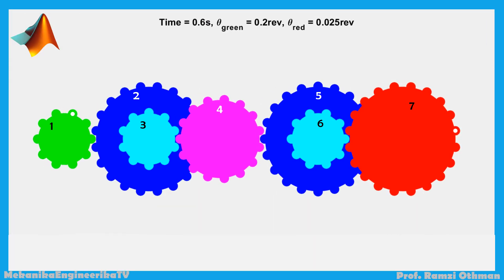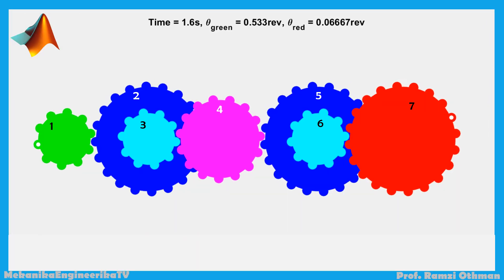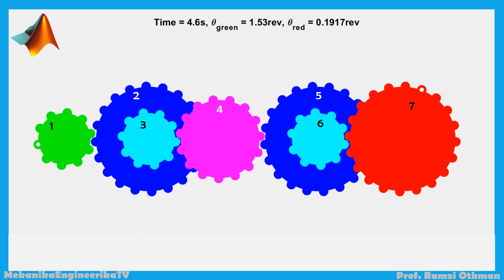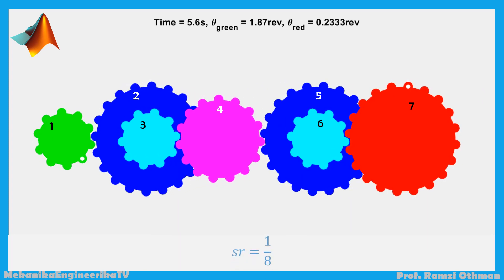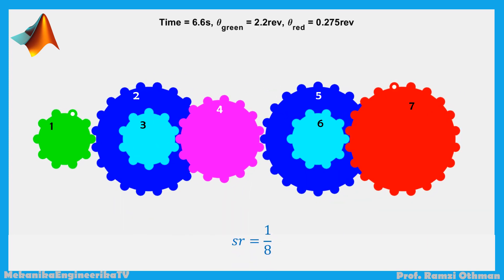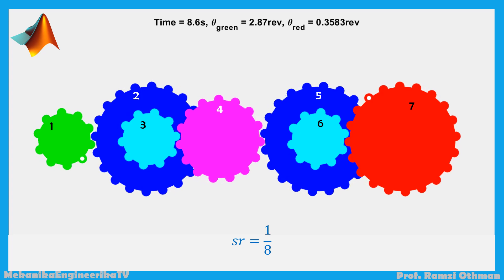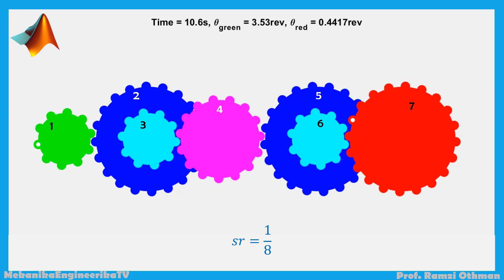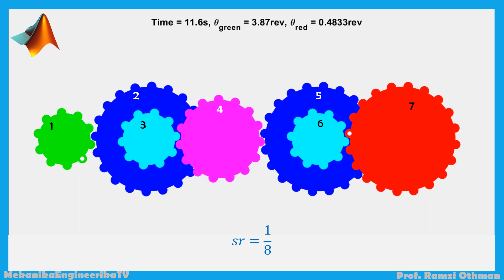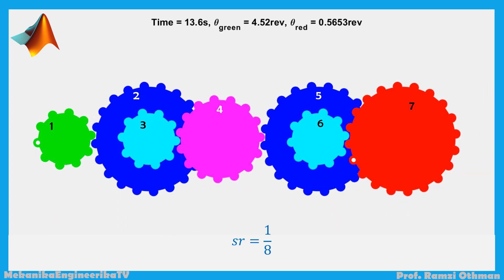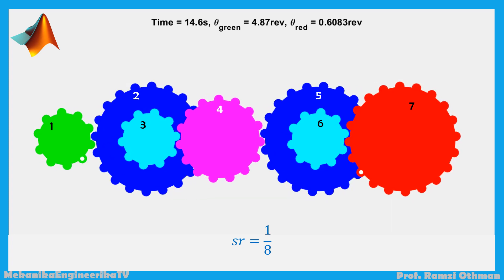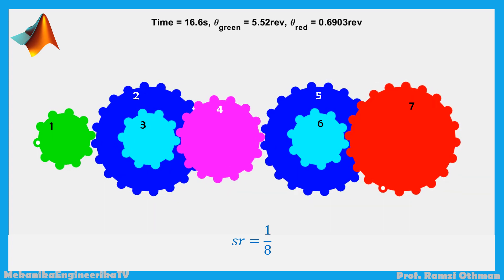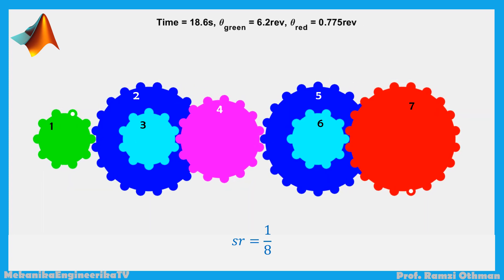Here, we made an animation using MATLAB. The speed ratio is 1 over 8. The input gear 1 is 8 times as fast as the output gear 7. The input green gear 1 makes 8 revolutions while the output red gear 7 makes 1 revolution.